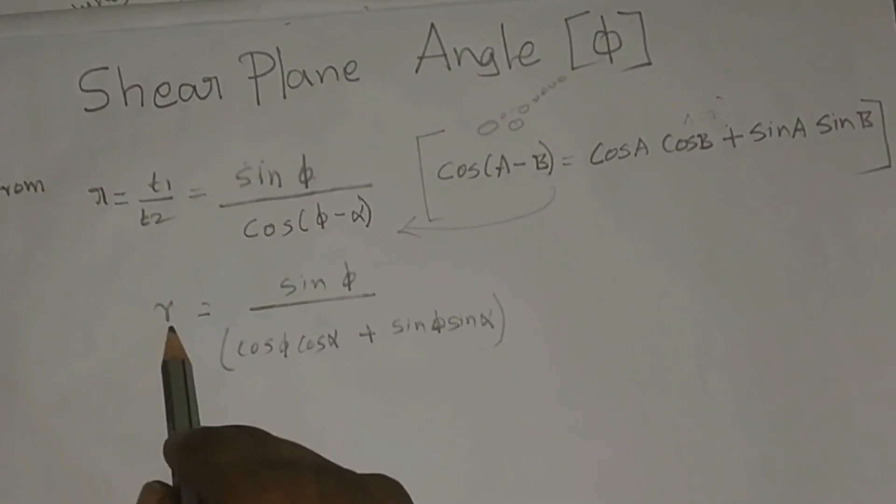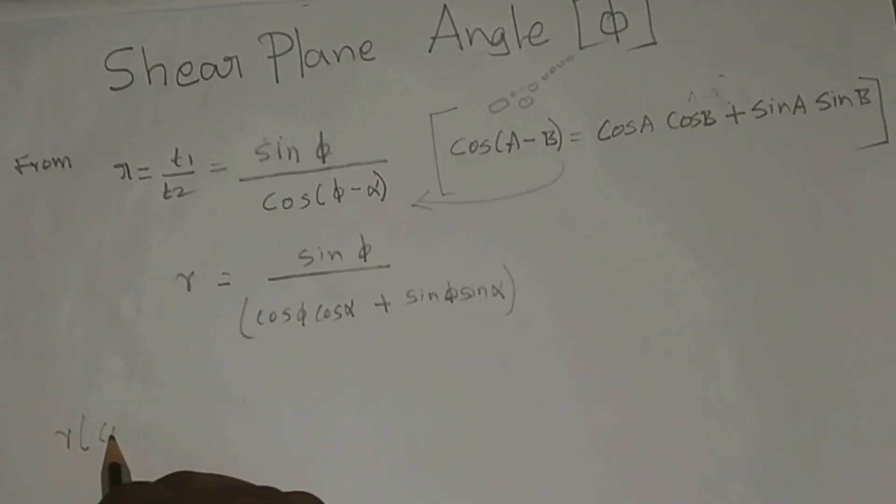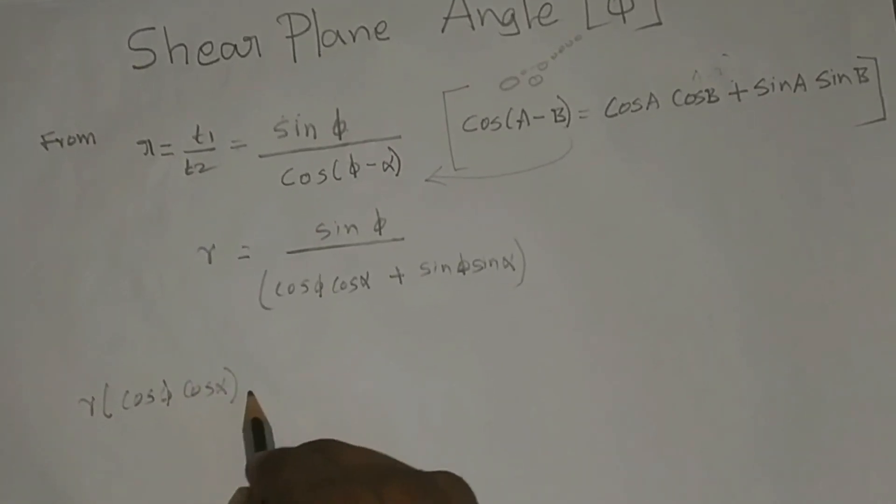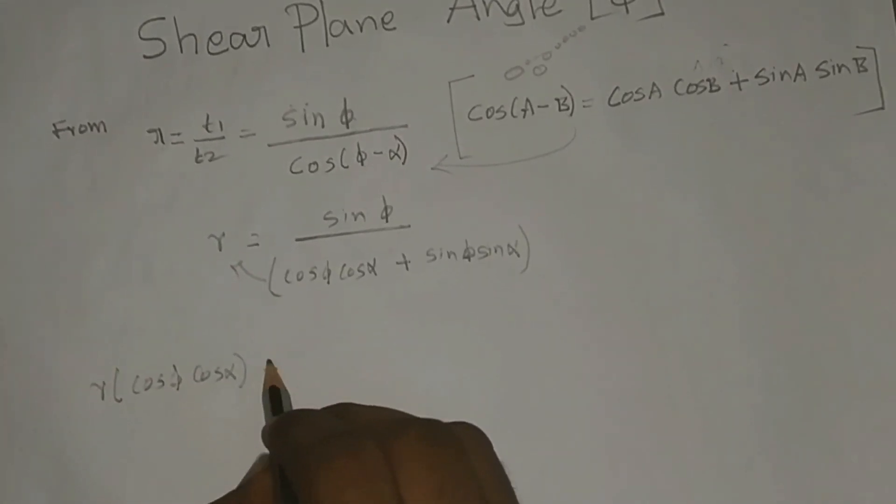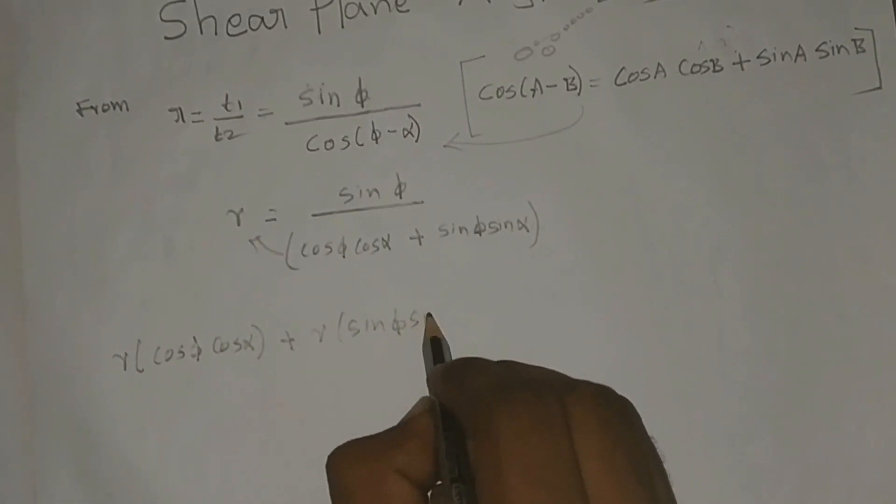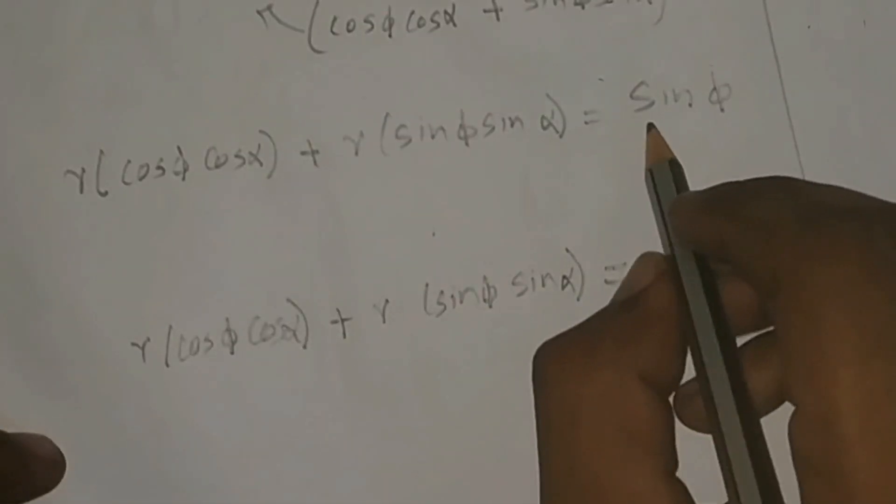Now, cross multiply this one. r cos φ cos α + r sin φ sin α = sin φ.